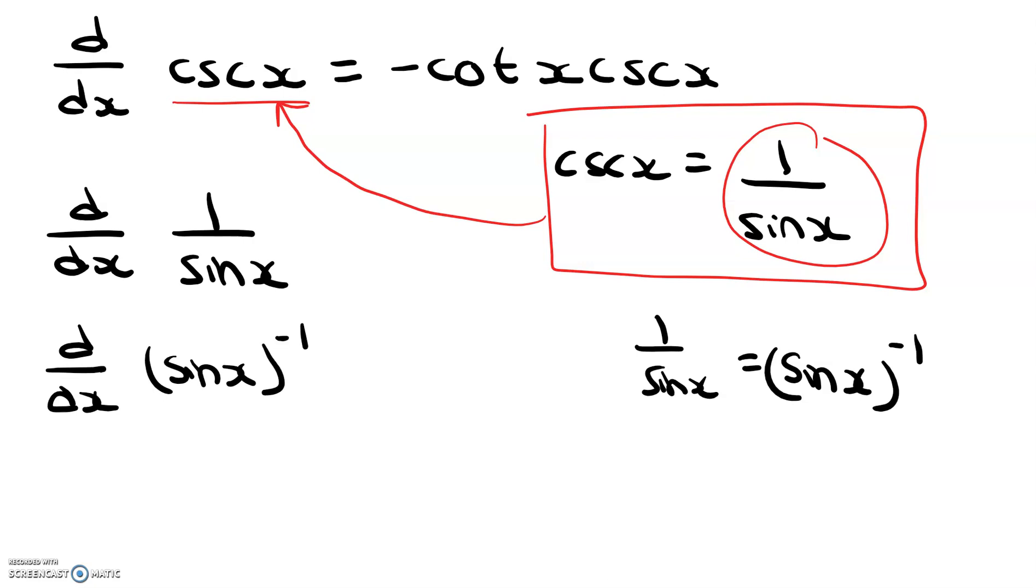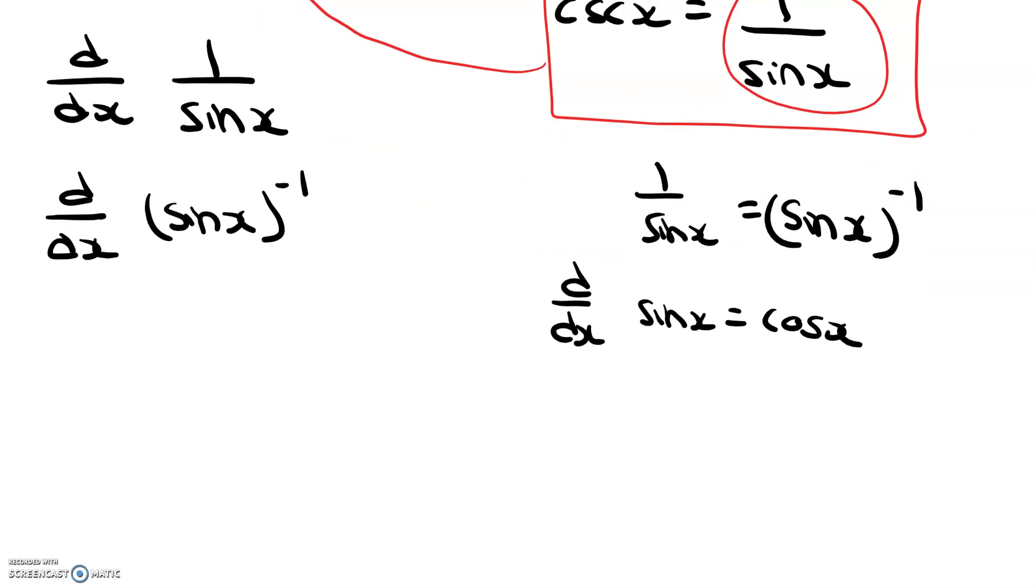Alright, so now that we have it in this form, we're actually going to go ahead and take the derivative of this, and we're going to make sure that we use our power rule and then our chain rule as well. And when we use our chain rule, we have to remember that the derivative of sine x is equal to cosine x. Okay, so let's go ahead and do that.